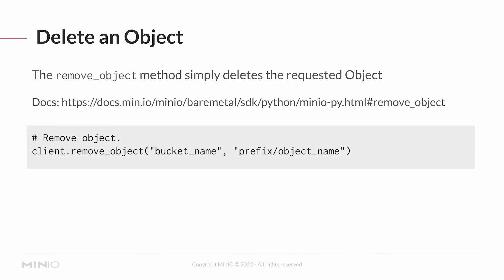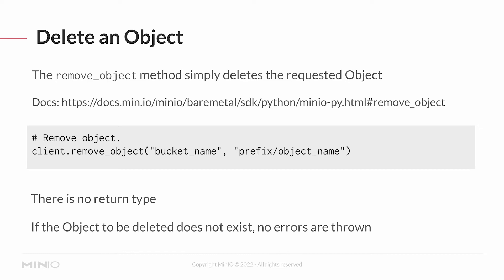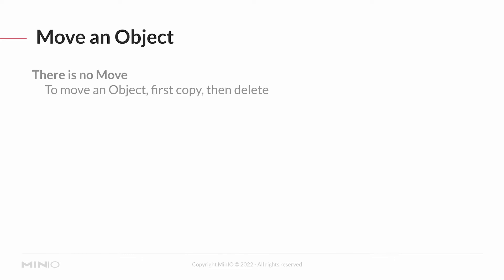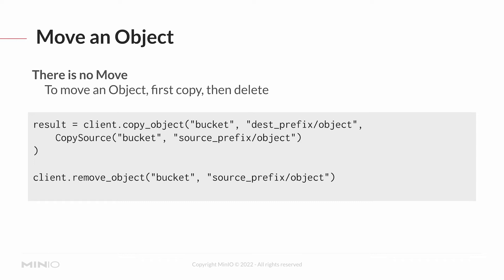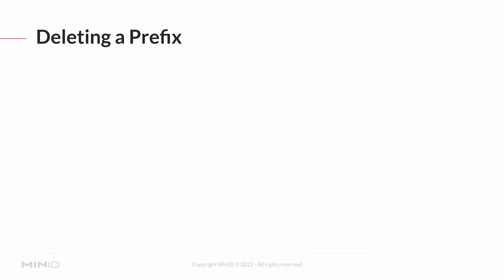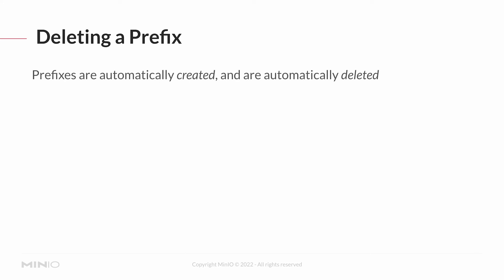When deleting an object, you use remove_object, which deletes the requested object based on the bucket and object name. There is no return type, and if the object doesn't exist you won't get an error — it's not considered an error to try to delete something that isn't there. There is no move operation in the SDK; to move an object you must first copy it and then delete the original. So it's always a two-step process — copy using CopySource, then call remove_object with the bucket, source prefix, and object name. Check that the copy succeeded before doing the remove.